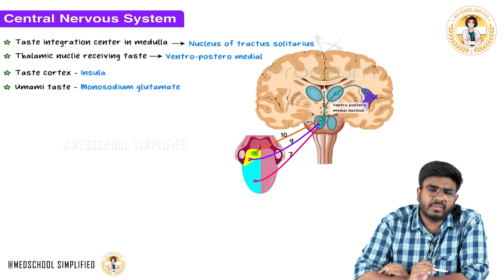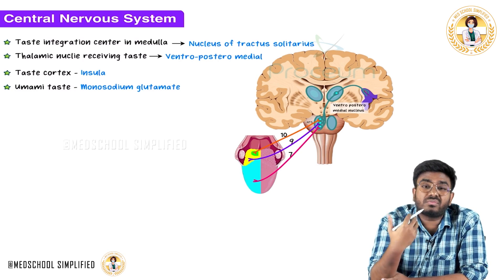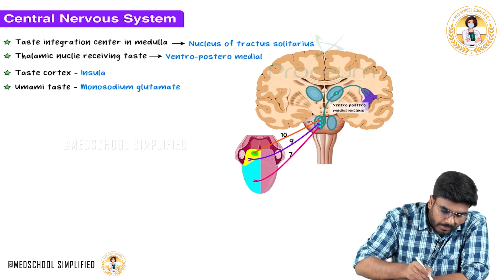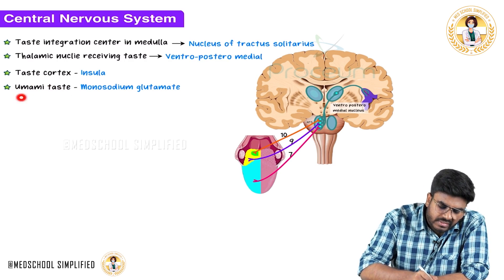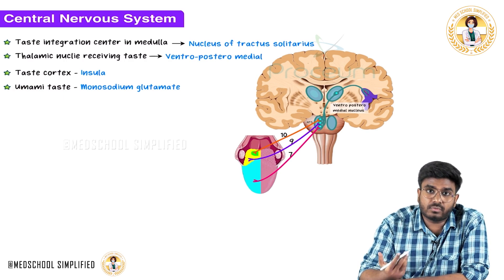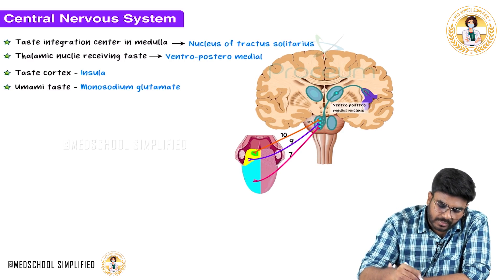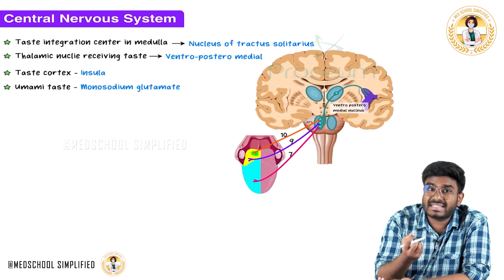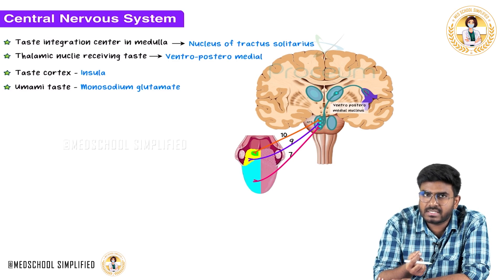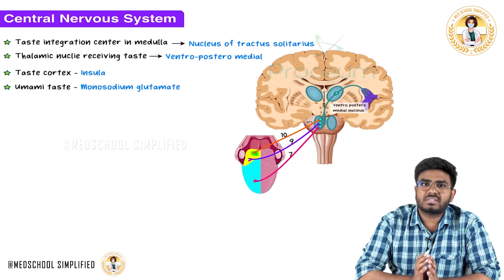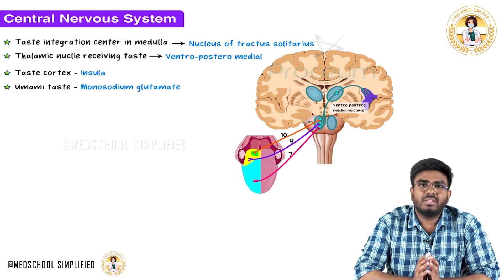There are different types of taste: sour, sweet, and bitter. There is also a newly discovered taste called umami, especially associated with Chinese foods. Chinese salt contains a chemical called monosodium glutamate, which acts on taste buds and causes the umami taste. With this we have discussed the taste pathway. Hope the video is helpful. Thank you.